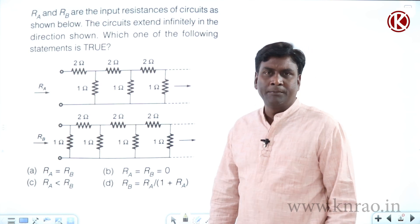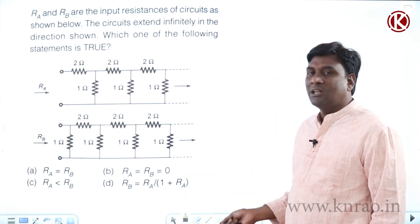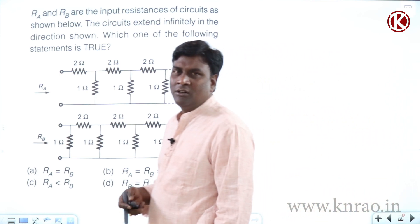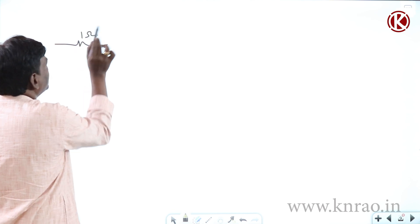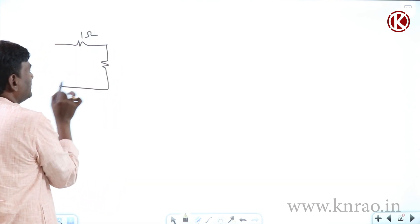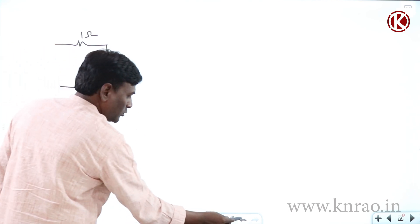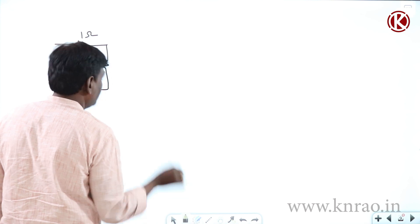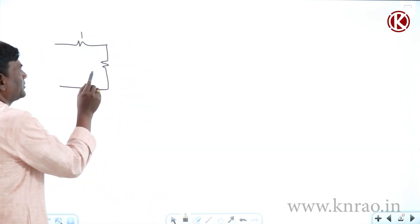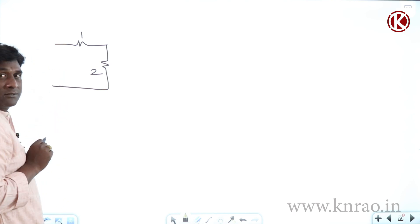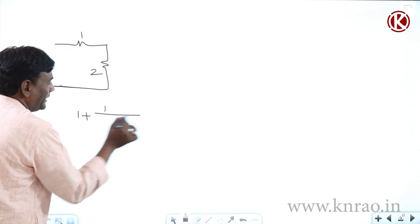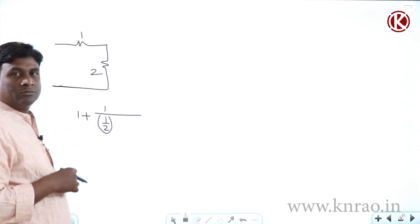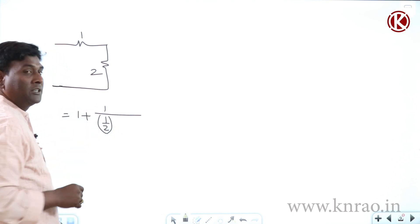The question is about an infinite ladder network. Before solving it, let me extend this discussion. For example, if I have a 1 ohm resistance and a 2 ohm resistance, the equivalent across this is going to be 1 plus 2 equals 3. So we write 1 plus 1 over (1/2), which gives 2 plus 1 equals 3.